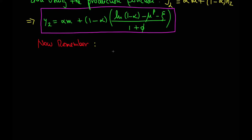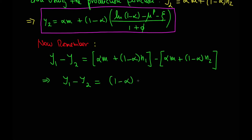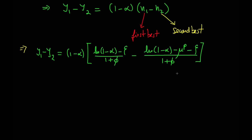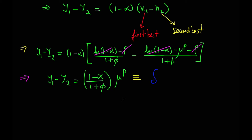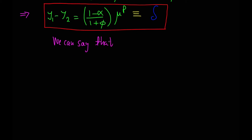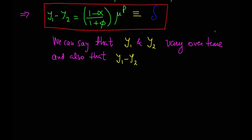So now remember, using the two definitions of the production function for the first best and the second best, and using the definition for N1 and N2 under the first best and the second best equilibrium conditions, we can build the gap between the two levels of output. As we can see here, the difference between Y1 and Y2 is constant. This will be very important for the result of the divine coincidence.